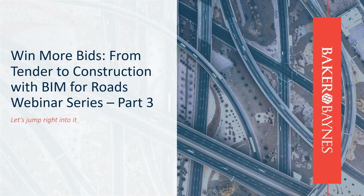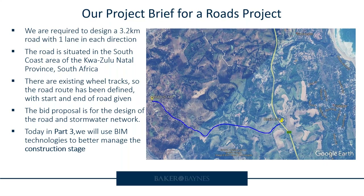This was our project brief from the start of the webinar series. We were required to design a 3.2 kilometer road, one lane in each direction, situated on the KwaZulu-Natal South Coast in South Africa. There was an existing wheel track, so the route was clearly defined. We created the bid, submitted it, got the tender, did the design, the contractor was appointed, and now they are busy building the road.